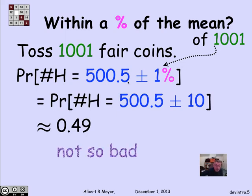It's almost 50-50, which is not really so bad. So we have a 50-50 chance of actually being within 1% of the expected number when I flip 1,001 coins.